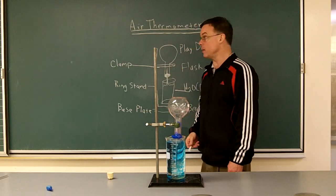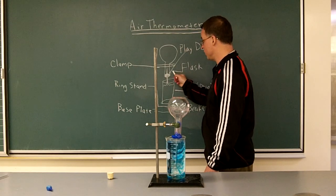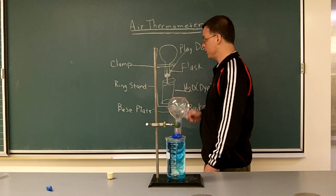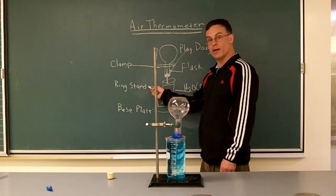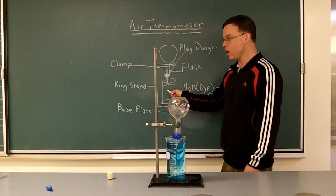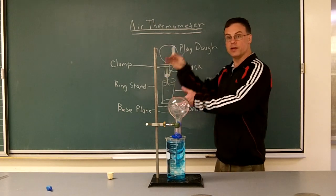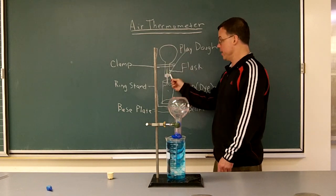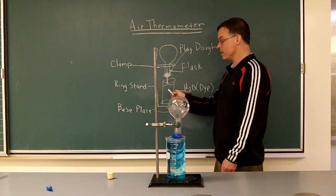These would be the key elements of an air thermometer. Remember that arrows can be very effective at indicating which part is being labeled. So one more time, air thermometer: we have a base plate, the ring stand, a clamp, we have a beaker with colored water in it, we have a clamp, we have a flask that's inverted, that's upside down, sealed with Play-Doh or a stopper, and the last part is a tube.